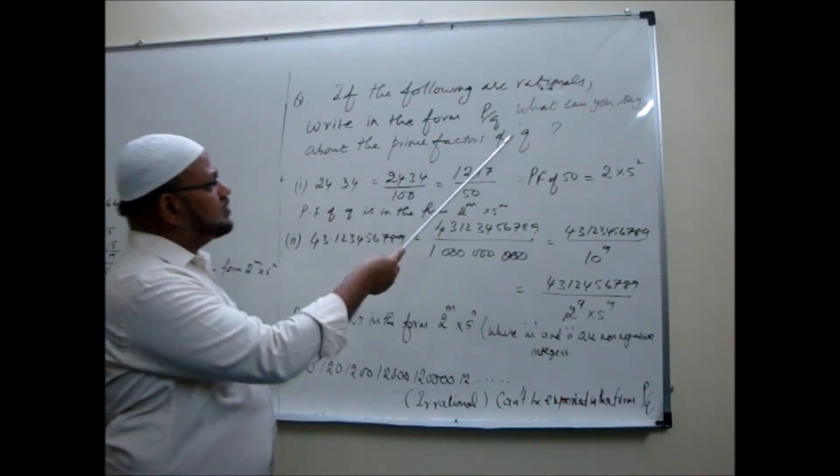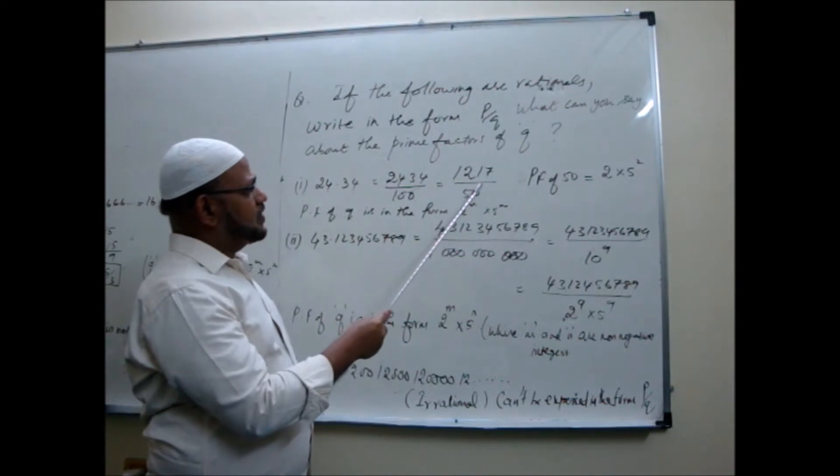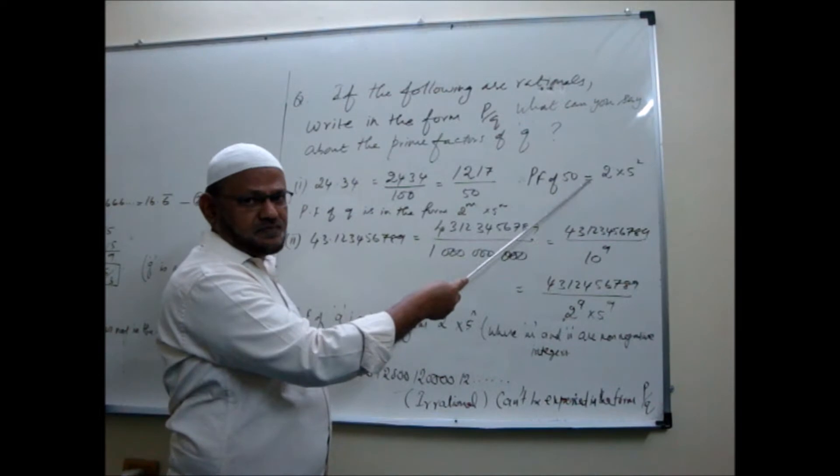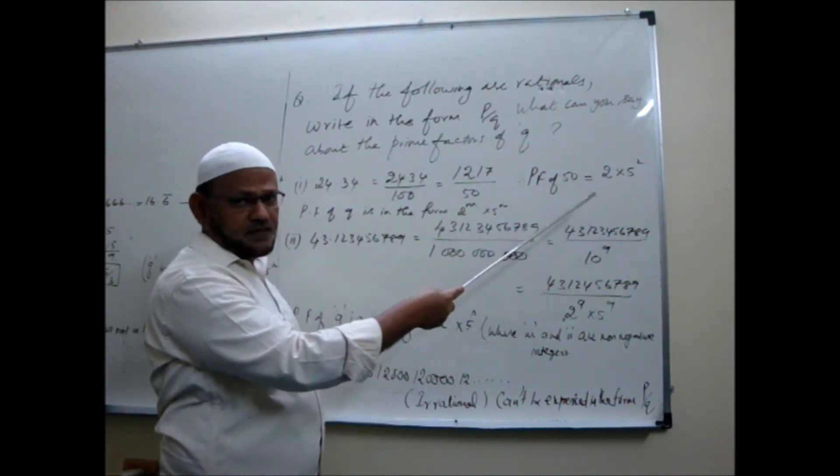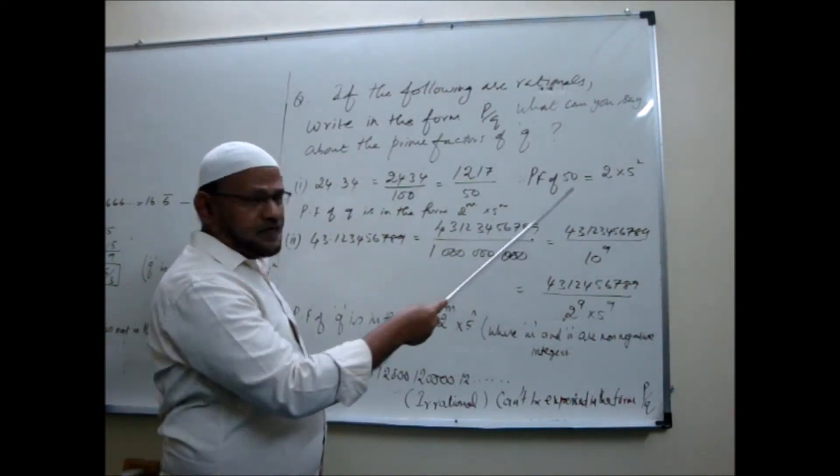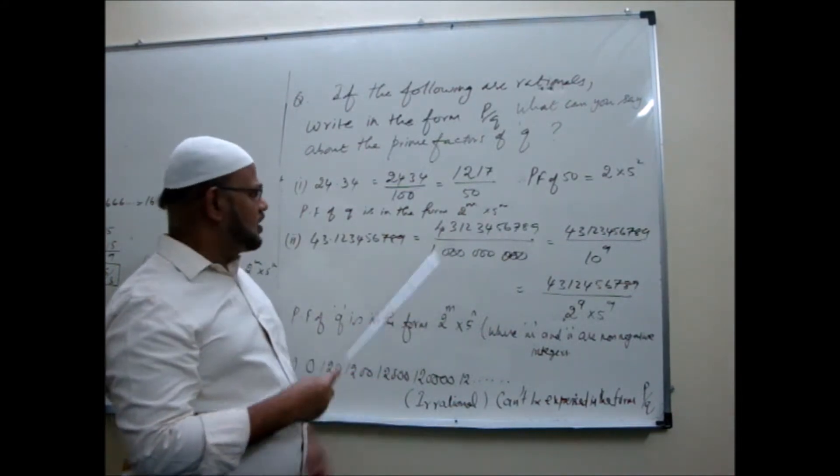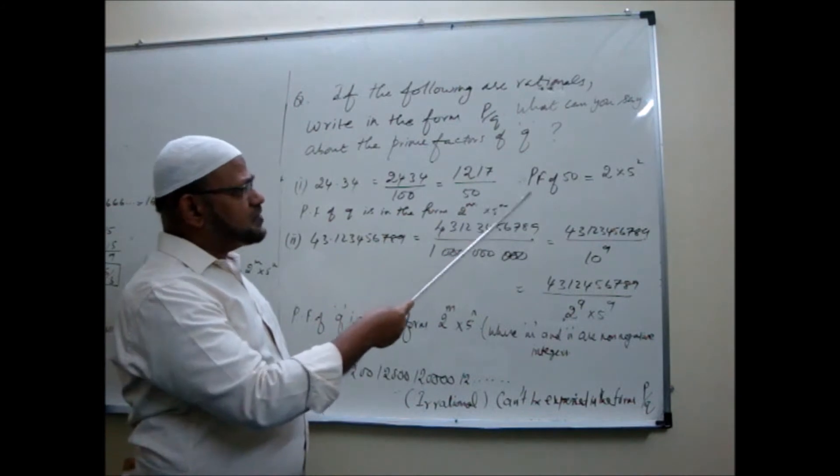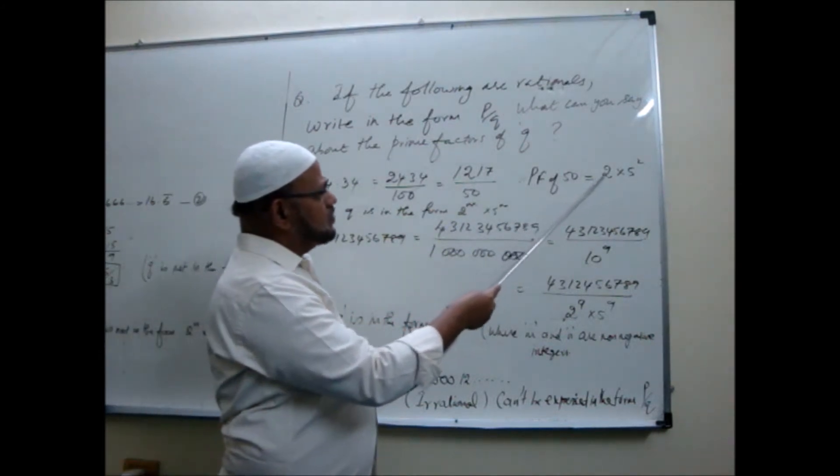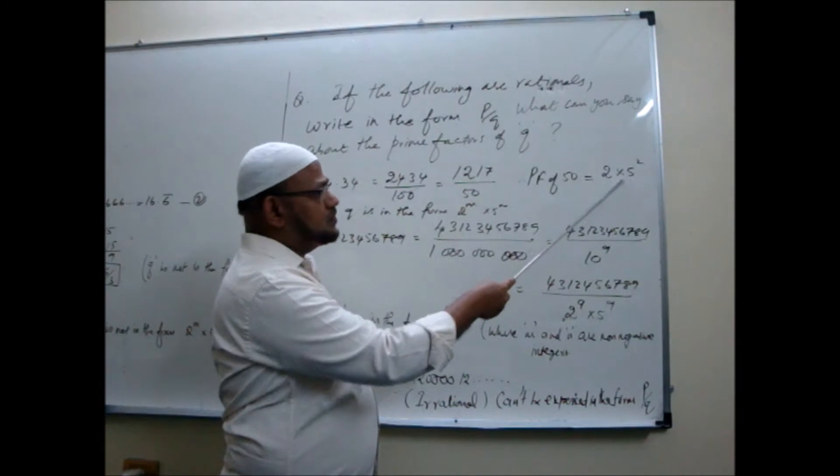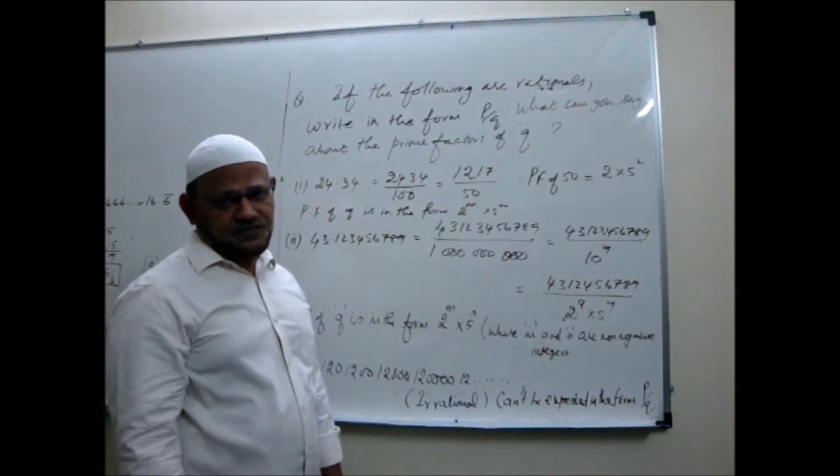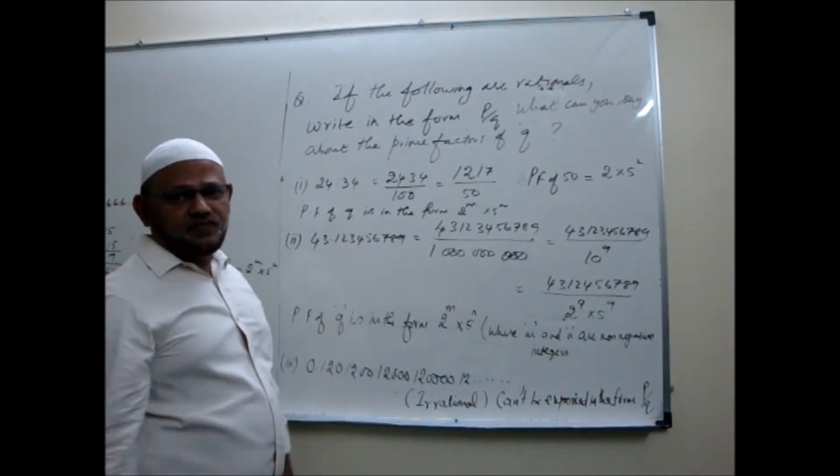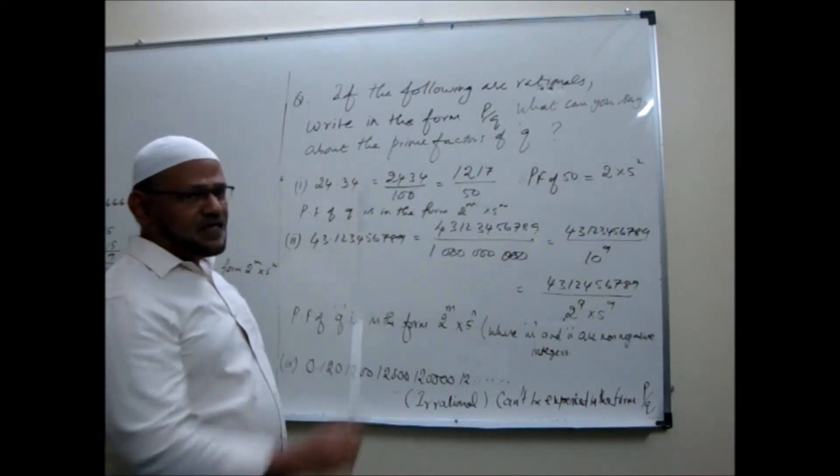Now they are asking what? They are asking what will be the prime factors of 50. Naturally it will have only 2s and 5s or 2 or 5 alone like that. No other prime factors will be present there. So we are just giving them how. So that 50 is equal to 2 into 5 squared. So only 2s and 5s are there. This is what the question expects us.